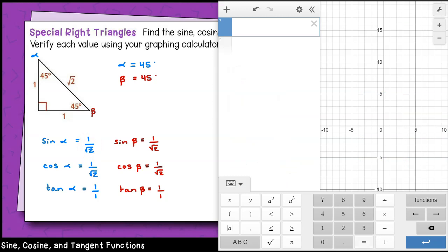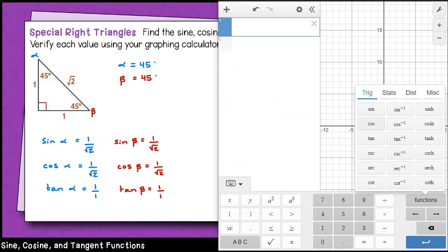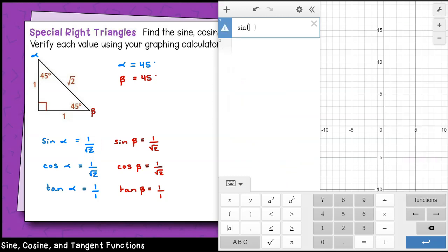Let's check out Desmos to see how to do this. Tap the functions button and select sine from the list, or you can just type SIN. In parentheses, type 45 for 45 degrees, and Desmos will automatically calculate based on what you've typed in.